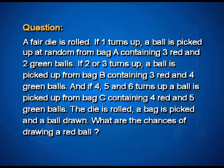In this situation, the selection of the bag depends on what the die shows, and therefore you have to consider all possibilities: what if the die shows 1, or 2 or 3, or 4, 5 and 6? Let us look at it in a tree diagram form. We branch out all the possibilities, which puts the entire picture in a very concise manner.